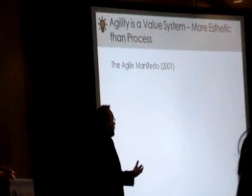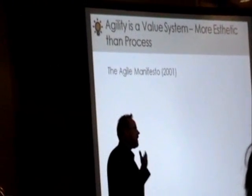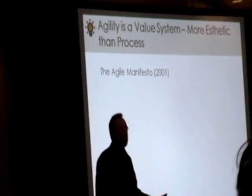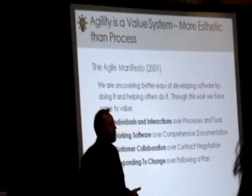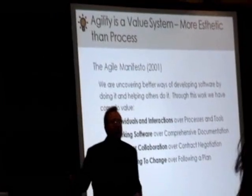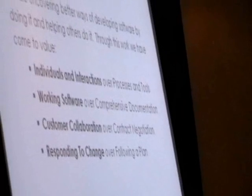The manifesto expresses pairs where while we value the thing on the right side, we value the thing on the left side more. The first pair is individuals and interactions over process and tools. The idea is it doesn't matter how good the process is we follow — if our people are poor, we're not getting anything out of it. But if you take good people and put them in any process, they'll produce. The second value is working software over comprehensive documentation.